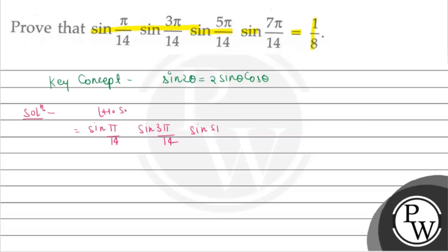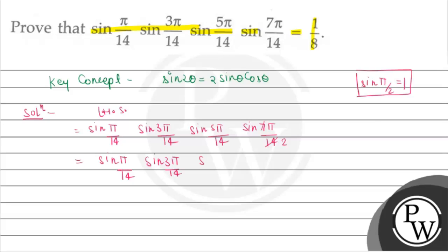We also have sin(5π/14) and sin(7π/14). Now sin(7π/14) = sin(π/2) = 1. So we are left with sin(π/14) · sin(3π/14) · sin(5π/14).